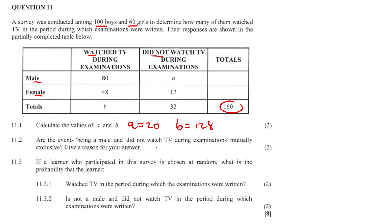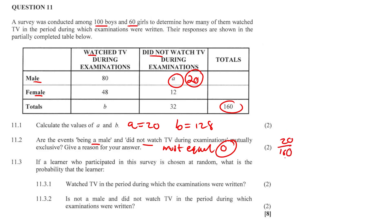No, they're not mutually exclusive. Here's the reason why: being a male and did not watch TV during exams — so there's male, there's did not watch TV, we're looking at A. A is equal to 20. If events are mutually exclusive, they must equal zero. This equals 20 out of 160 — that's not zero. That's 11.2 sorted.